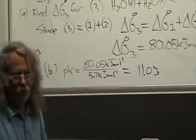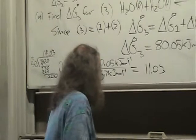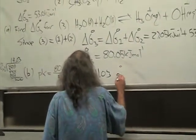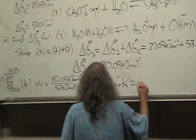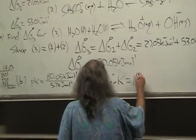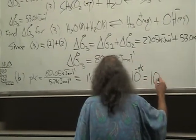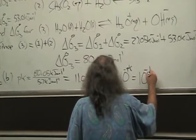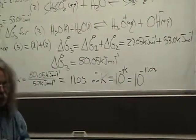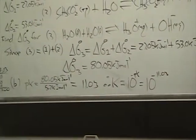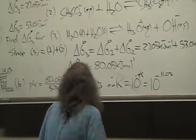11.03, that was a lot of work for that .03. And therefore, K equals 10 to the minus pK equals 10 to the minus 11.03. Now, that's a sufficient answer, but anybody who wants to take it the next step can do the following factoring.